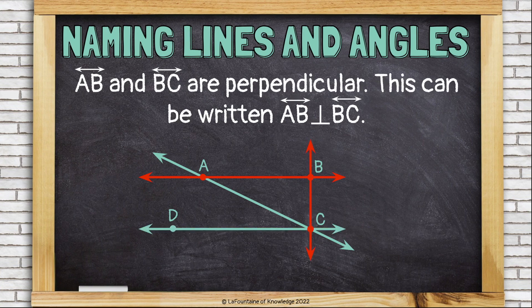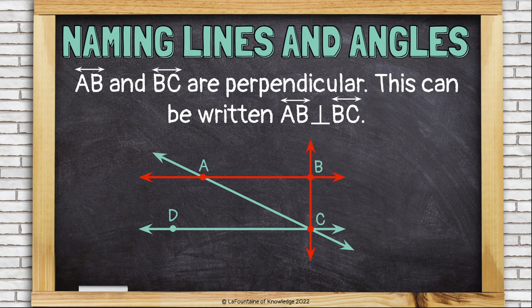Line AB and line BC are perpendicular. This can be written by writing line AB and then using the perpendicular symbol, which looks kind of like the letter T upside down, and then writing the other line, line BC.